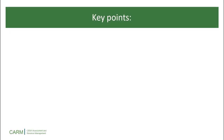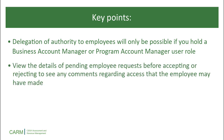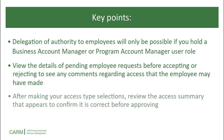Here are some key points to remember. Delegation of authority to employees will only be possible if you hold a Business Account Manager or Program Account Manager user role. View the details of pending employee requests before accepting or rejecting to see any comments regarding access that the employee may have made. And finally, after making your access type selections, review the access summary that appears to confirm it is correct before approving.